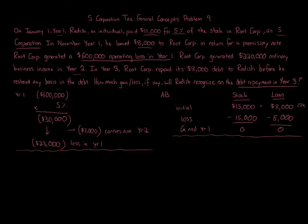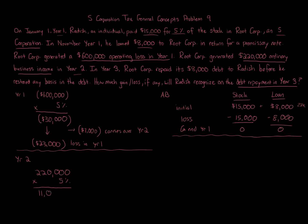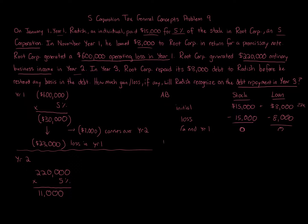In Year 2, Root Corp has $220,000 of ordinary business income. Multiply that by 5% — that's $11,000 allocated to Radish. Remember the ordering rules: income items are allocated first. On the left side we track the allocation of income items and the carryover loss. Year 2 starts with income.